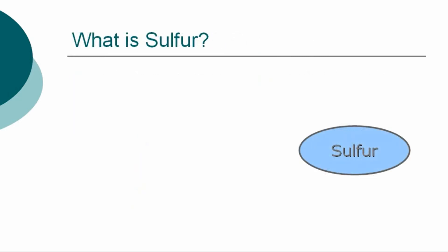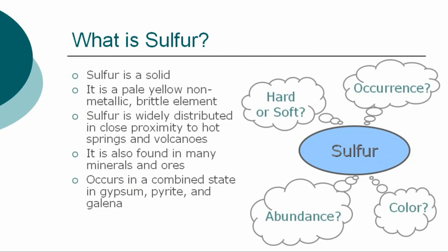What is sulfur? In a general overview of the element, we can at first describe sulfur as a solid. It is a pale yellow non-metallic brittle element and is widely distributed in close proximity to hot springs and volcanoes, and is also found in many minerals and ores. Sulfur occurs in a combined state in gypsum, pyrite, and galena.